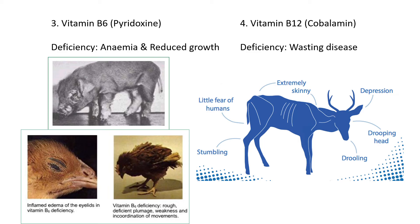Vitamin B6, also known as pyridoxine — usually B1 and B2 are the ones with difficult names to remember. A deficiency of B6 can cause anemia and reduced growth. As the picture shows, we see a little piglet having eye issues, struggling to open its eyes, and it's very small and runt-like, not growing. Similarly, the chicken pictures show inflamed eyes that swell and struggle to open, ruffled feathers not lying correctly, plumage issues, and growth issues.